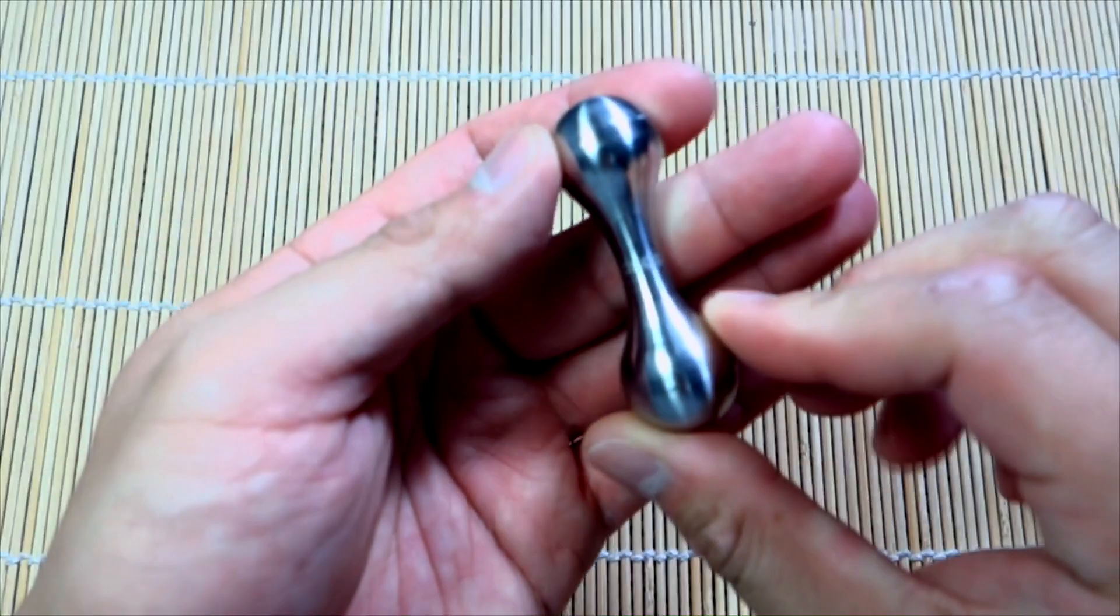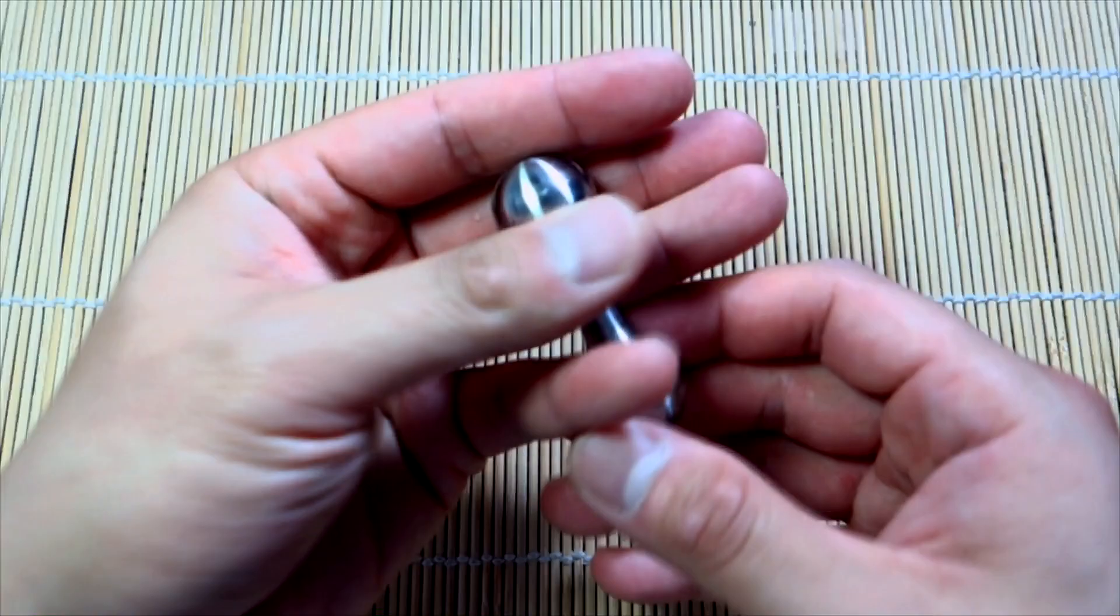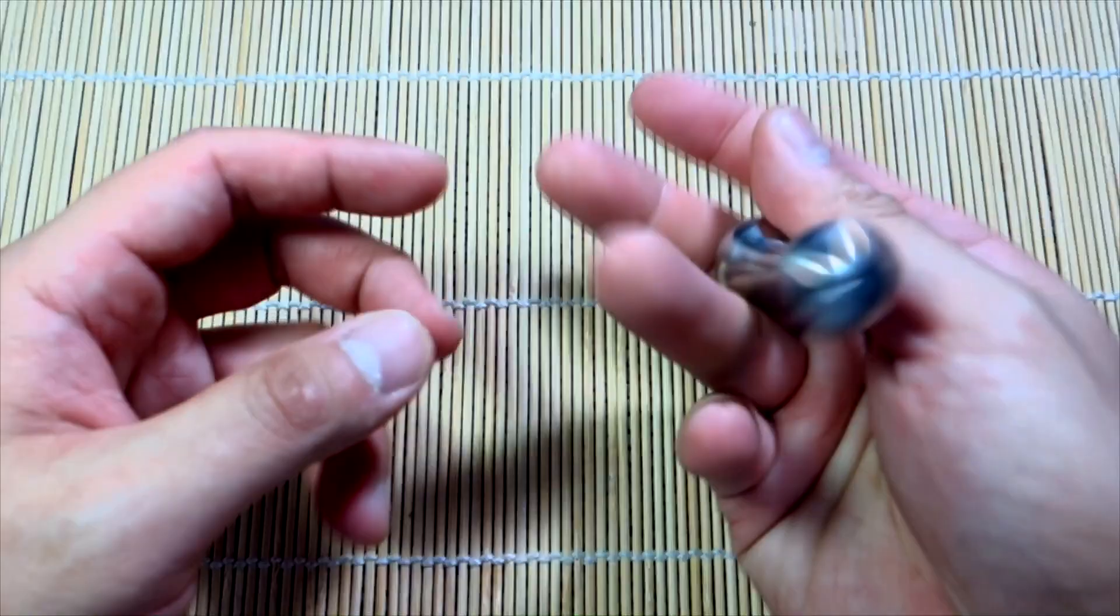But as you can see, it's just this kind of dumbbell-shaped piece of stainless steel. And you use it, as I've been showing you so far - you just roll it in between your fingers. And that weight on each end really helps you manipulate it in between your fingers.